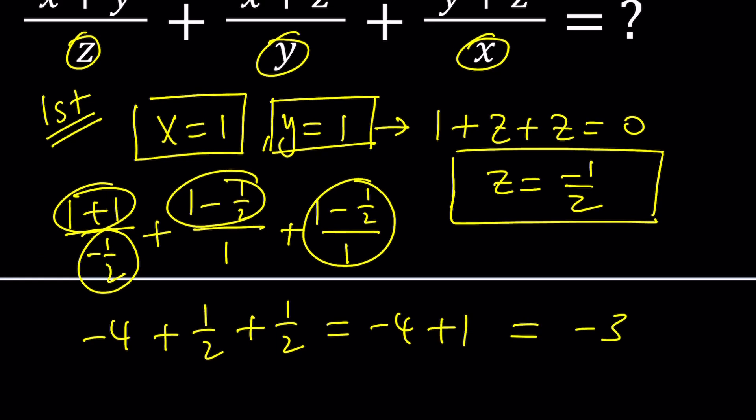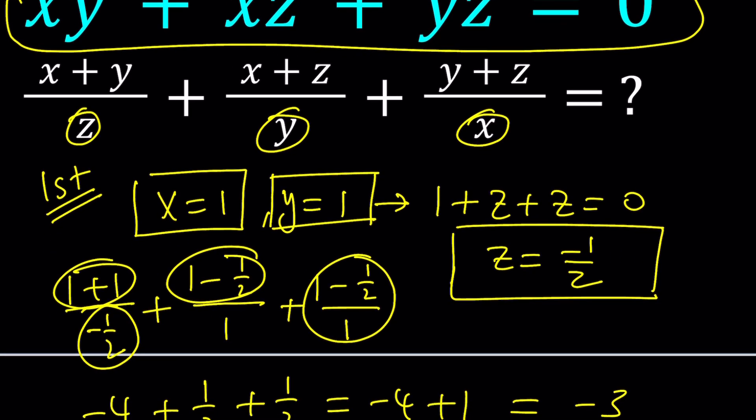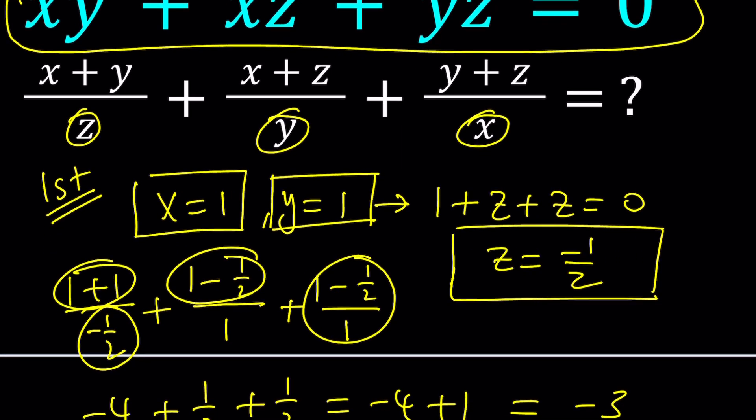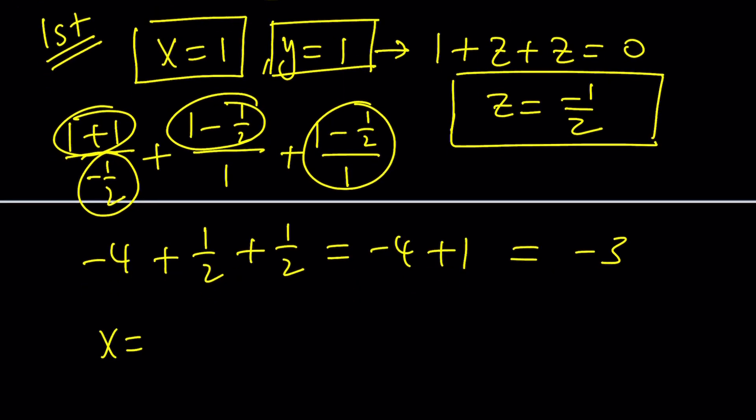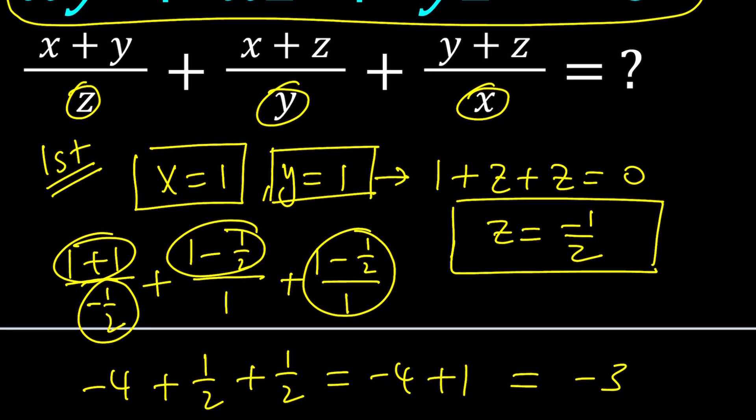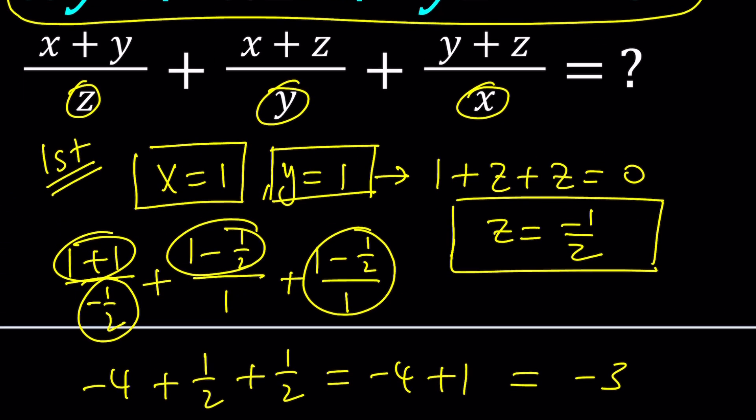Looks like these values give me negative 3 but here's the thing. Is it always going to be a constant? Well ideally it should be. So can we try a different triplet of numbers? I could probably say let x be 2 and y be 1 and then from here find the z.